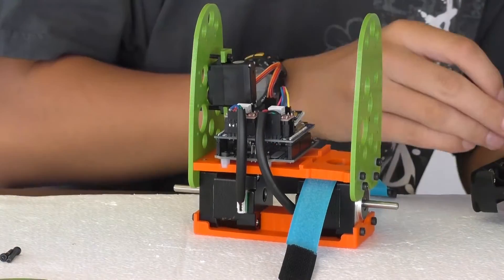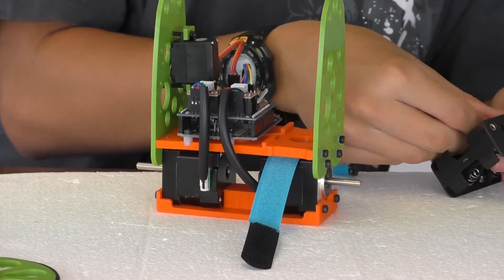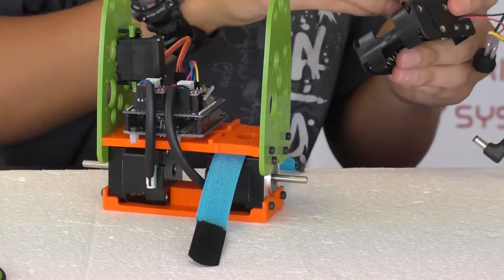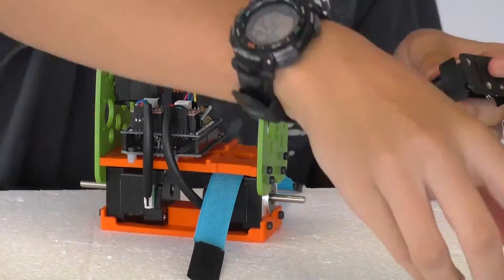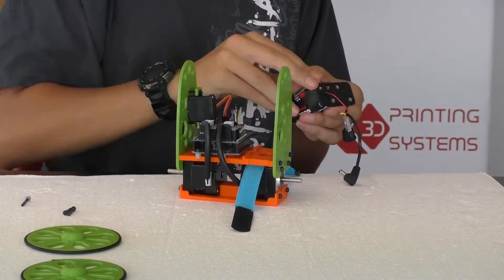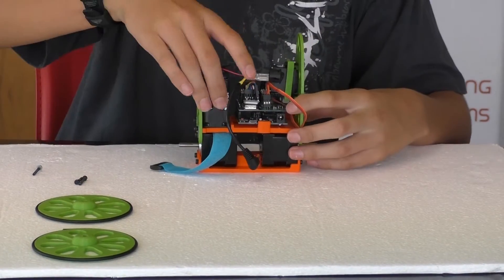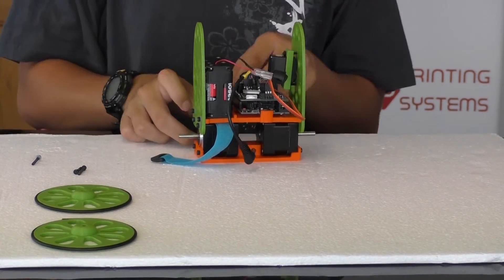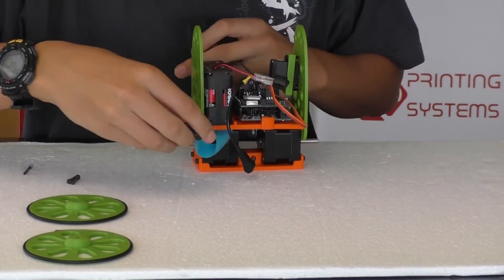Next, put in all the batteries. Make sure that the negative and positive are facing the correct ways. Put in the battery, and wrap around the strap.